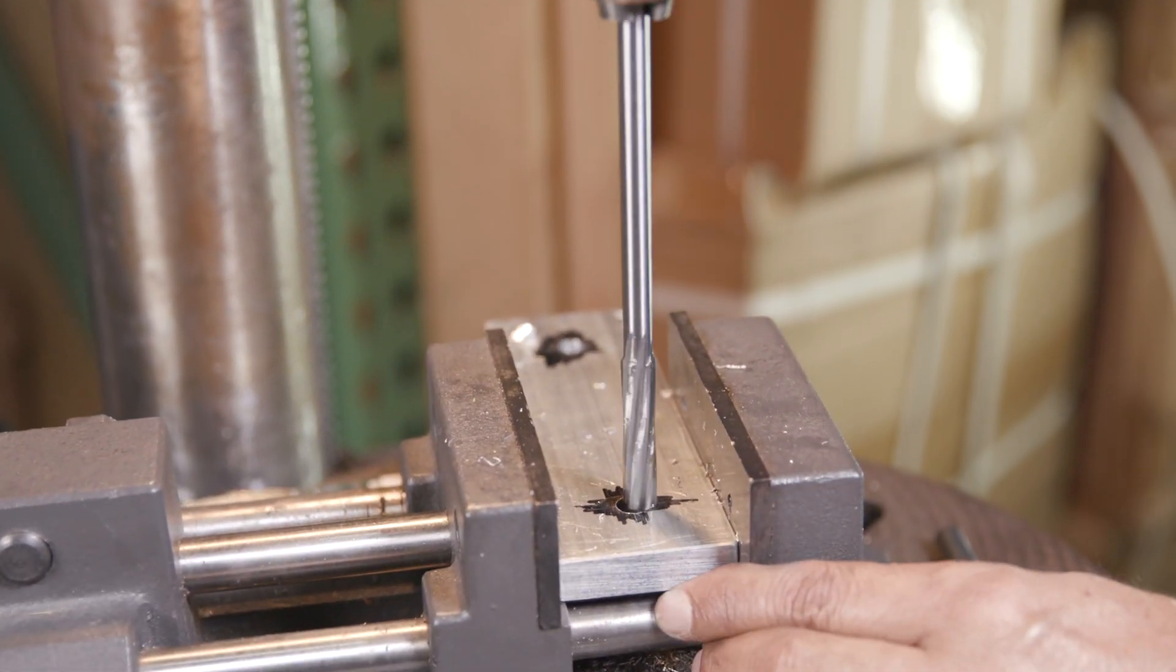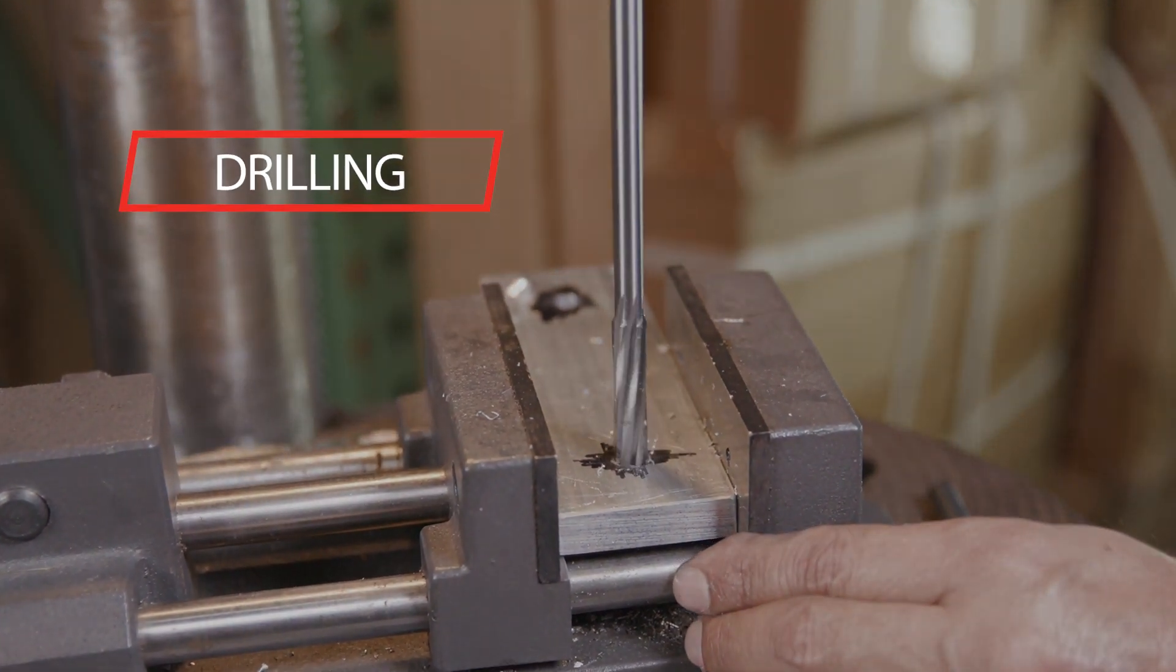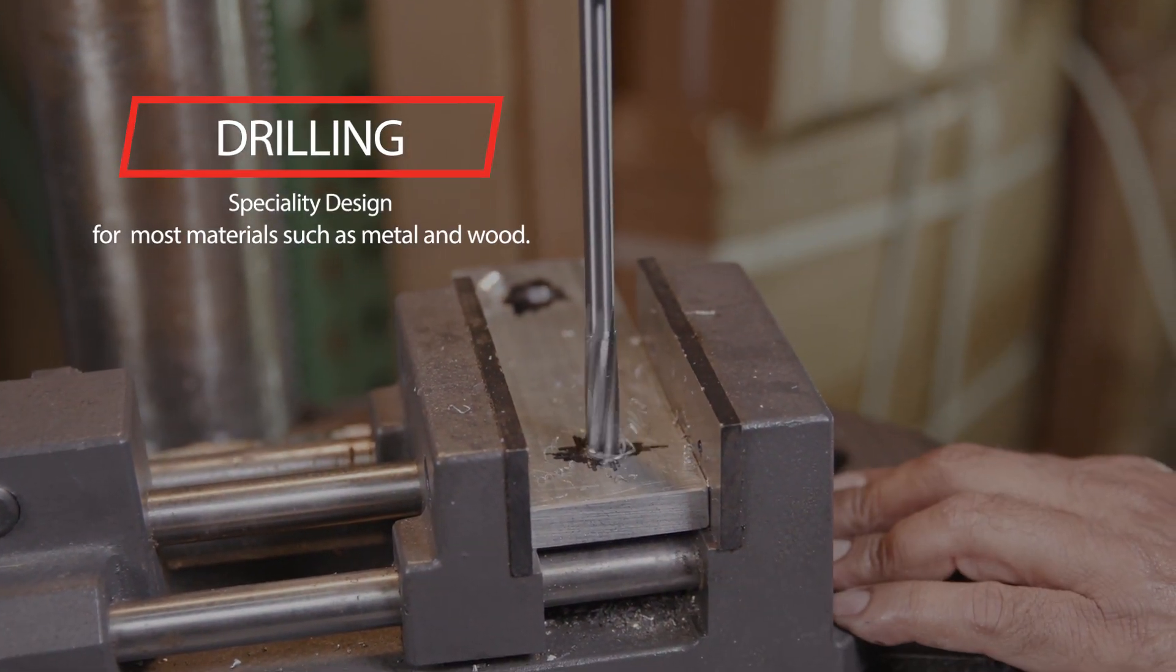Chucking Reamers are designed for accurate reaming in most materials, such as stainless steel, aluminum metal, and plastics.